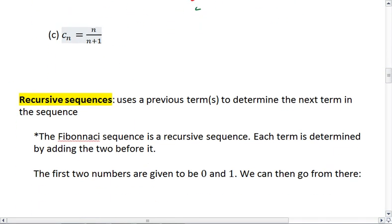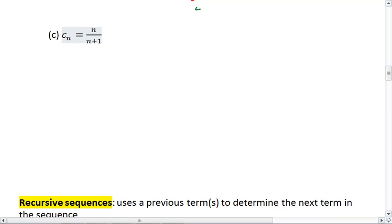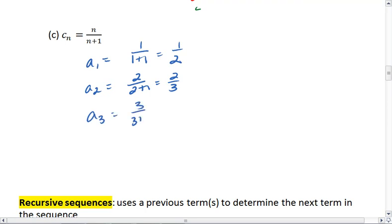All right, lastly, let's look at c_n. For the first term, I plug in 1, so I get 1 over 1 plus 1, which is 1 half. Second term, I plug in 2. I get 2 over 2 plus 1, which is 2 thirds. Third one, I plug in 3. I get 3 over 3 plus 1, which is 3 fourths.